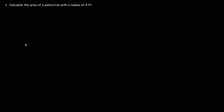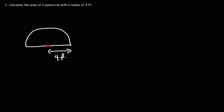Semi means half, so what we have is half of a circle. The radius is the distance between the center of the circle and any point on the edge of the circle. So this is 4 feet — that's the radius.